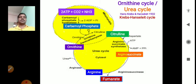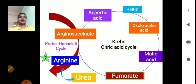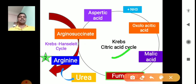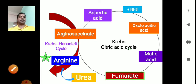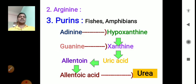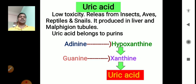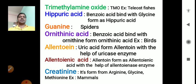We discussed how fumarate enters the Krebs cycle, how ornithine is re-formed and urea is produced in connection with the citric acid cycle. Ornithine and purines were also covered, including how uric acid is formed. These excretory products were deeply discussed in the previous video.